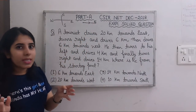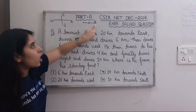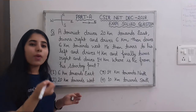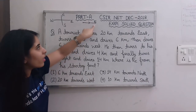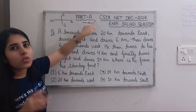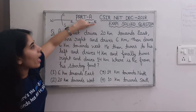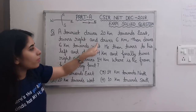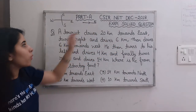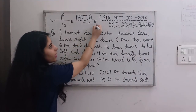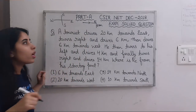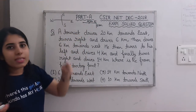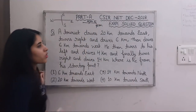He turns right and drives 6 km. Consider yourself standing at that point, moving towards the east direction — your right-hand side is south. If there is any confusion about direction, imagine yourself moving that way and it will become clear. So from the eastward point, turning right means going south, and we move 6 km south.